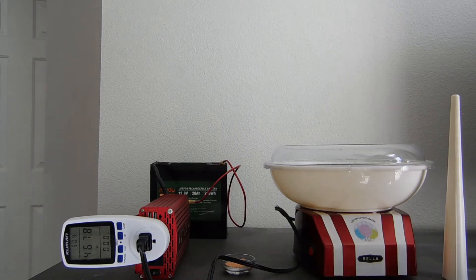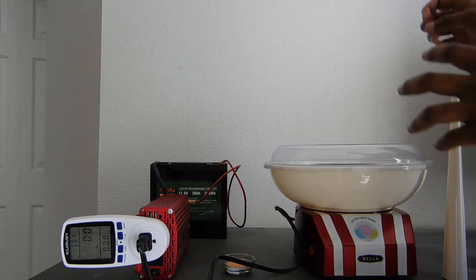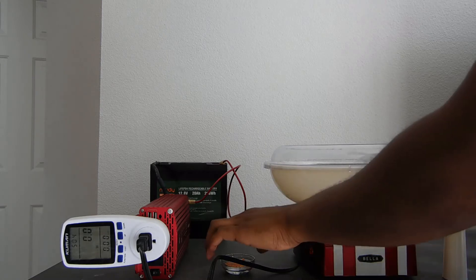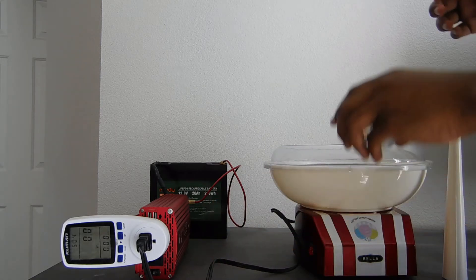Alrighty, so we've let the battery run for about 5 minutes. That's enough time to heat up the heating element within the cotton candy machine. Let's throw in our flossing sugar and see if it's actually gotten there.